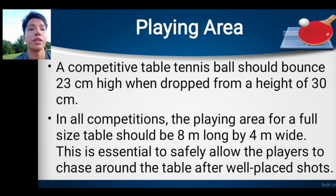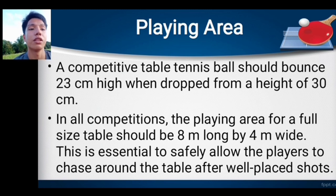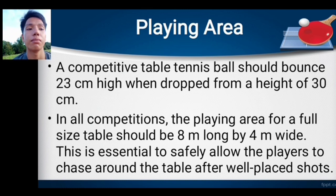The net extends 15.25 centimeters or 6 inches past the end of the table. The competitive table tennis ball should bounce 23 centimeters high when dropped from a height of 30 centimeters. In a competitive competition, the playing area for a full-size table should be 8 meters long by 4 meters wide. This is essential to allow the player to move around the table after a placed shot.